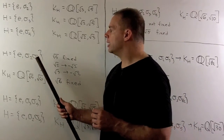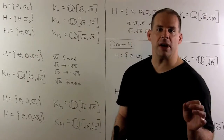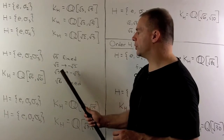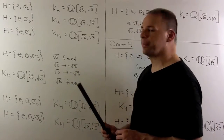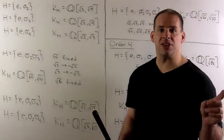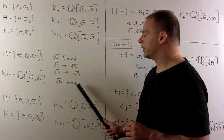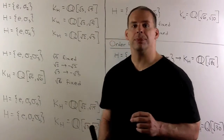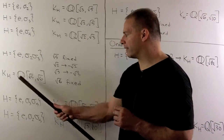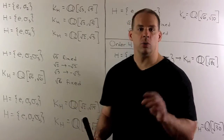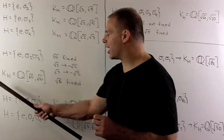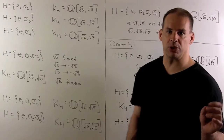Consider the subgroup {e, σ₂, σ₃, σ₂σ₃}. Under σ₂ and σ₃, √5 is fixed while √2 and √3 go to their negatives, so they're not in the fixed field. But their product √6 has the negatives cancel, so √6 is fixed. The fixed field is Q(√5, √6) — checking the rest of the basis confirms √30 is covered. Repeating this argument for (σ₃, σ₅) and (σ₂, σ₅) gives another three subfields.